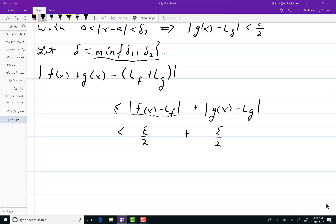However, that one, the g of x one, deals with delta 2. And since I'm taking the minimum of these two things, delta is also less than or equal to delta 2.